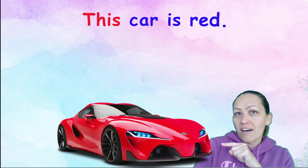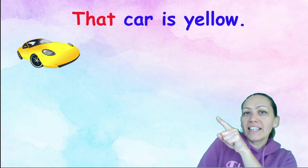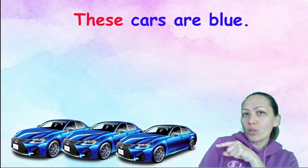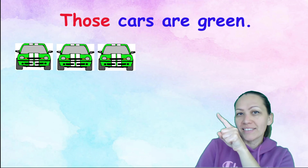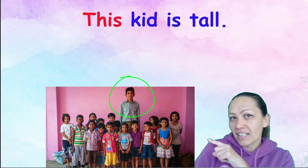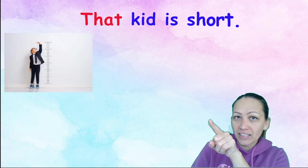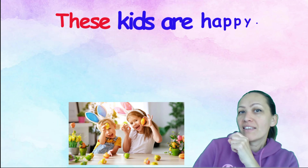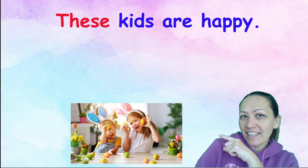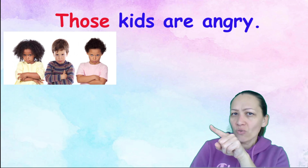This car is red. That car is yellow. These cars are blue. Those cars are green. This kid is tall. That kid is short. These kids are happy. Those kids are angry.